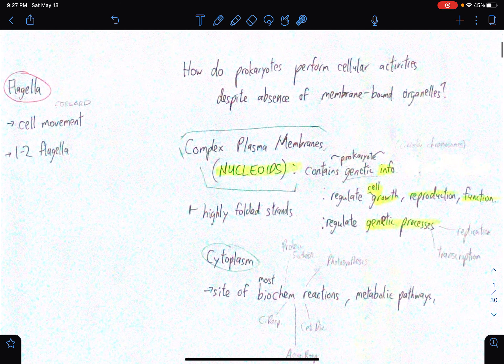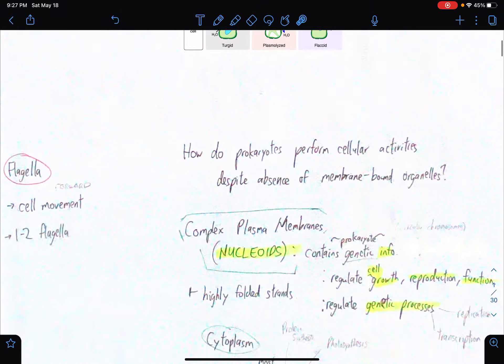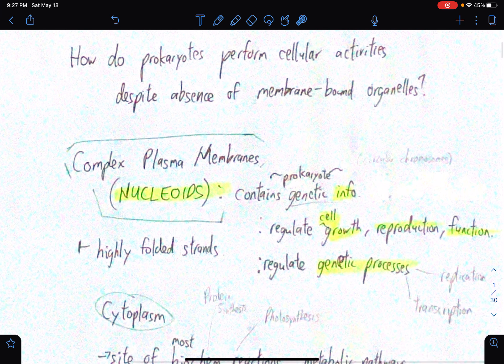Okay, so there's also a flagella. So this is for cell movement. So how do prokaryotes perform cellular activities despite the absence of membrane-bound organelles? So speaking of what I mentioned earlier, something about plasma membranes. For prokaryotes, their plasma membrane is actually more enhanced in the sense that it caters what's supposed to be the function of membrane-bound organelles, which prokaryotes do not have.